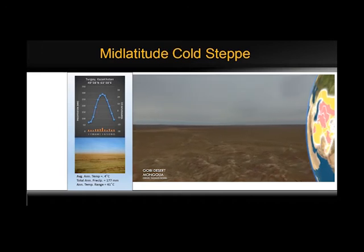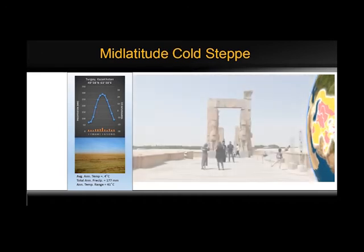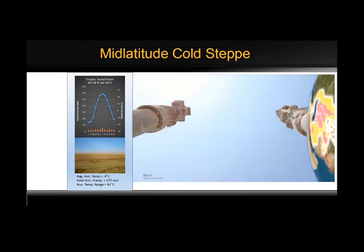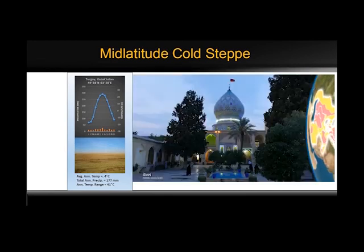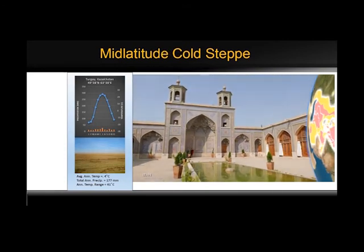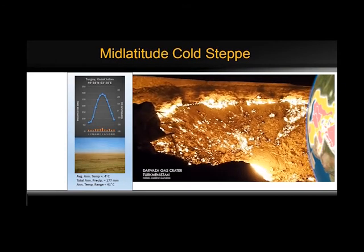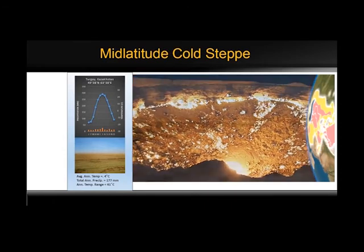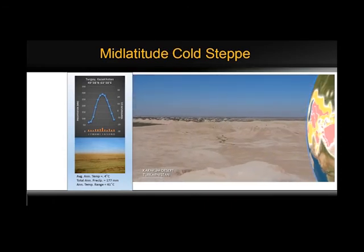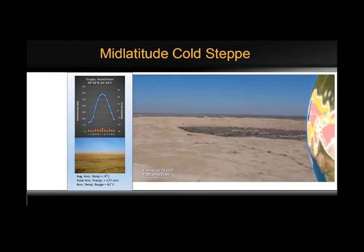There are a few generalities about the precipitation regimes of this climate. The seasonality of precipitation is similar to the nearest humid climate. Generally, the steppe climate bordering the humid continental climate is likely to have a summer maximum, while those bordering the humid subtropics may experience a winter maximum.